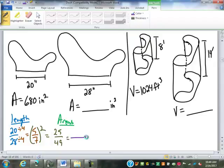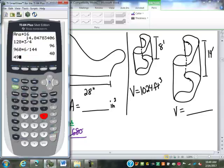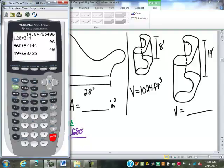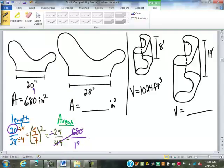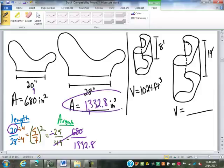Where's my 680? It goes with the 20. This is the 20, so it stays on top. So 49 times 680 divided by 25, 1332.8. How many of you got that? Cool.